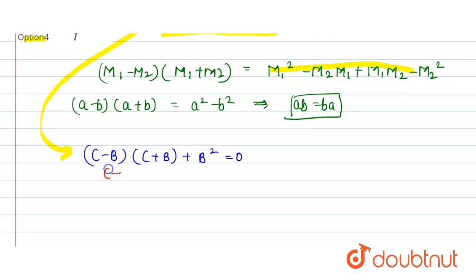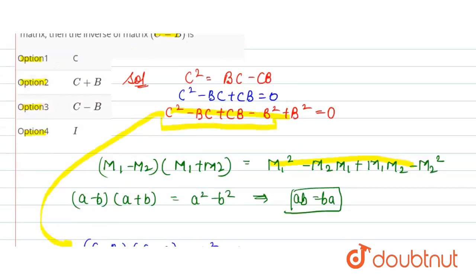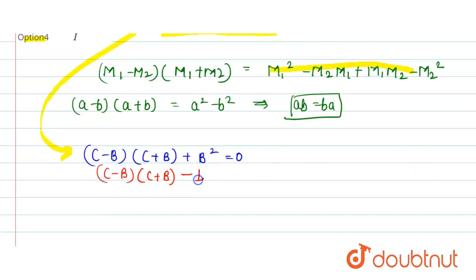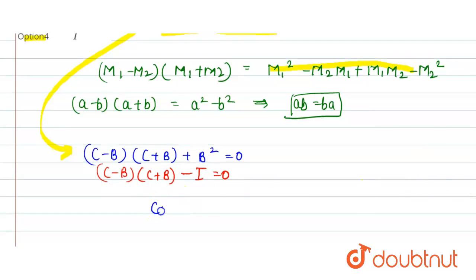So here C minus B into C plus B, and here in the question we have the value of B squared that is minus I is equal to 0. And we can write it as C minus B into C plus B is equal to I.